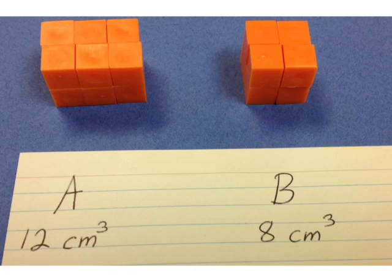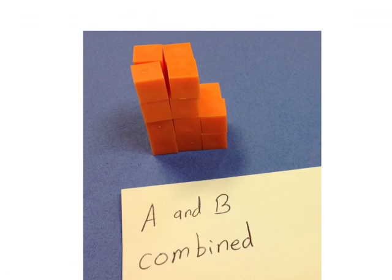If we want to keep the original dimensions, we want to find a way to combine these two structures and find the volume of our new structure. In this picture, we've taken structure B and placed it on top of structure A.